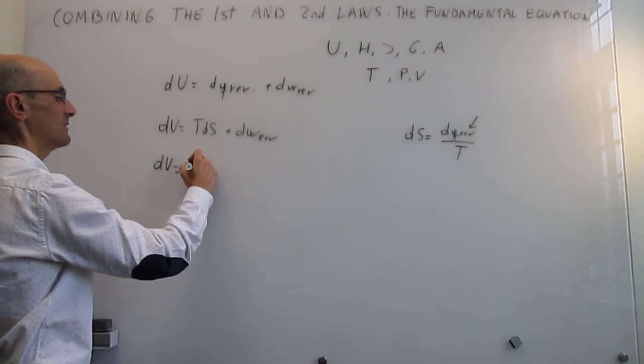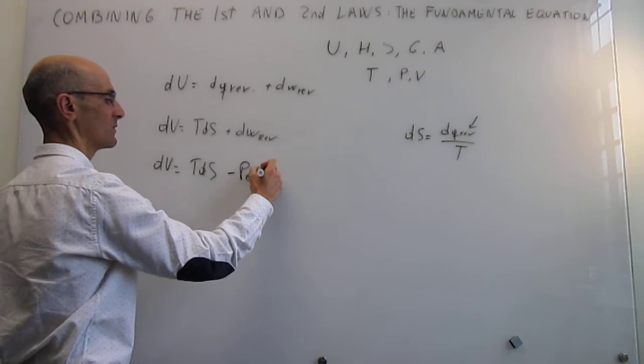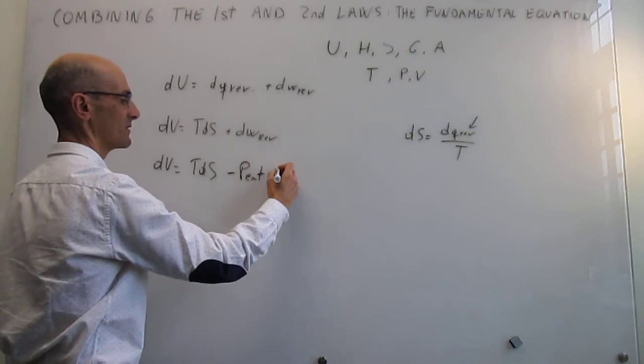Differential of U is T dS and if you only have expansion work then this is equal to P_external dV.